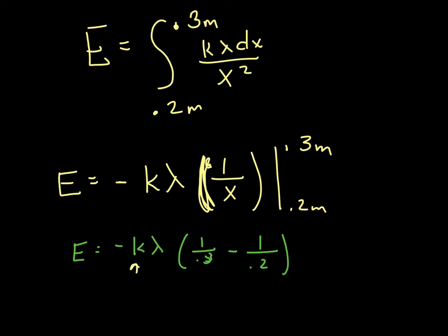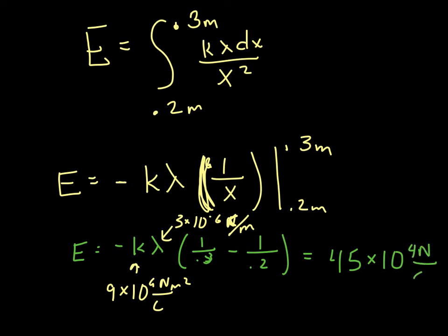Plugging in our value of k as 9 times 10 to the 9th newtons meters squared per coulomb, this is 4.5 newtons per coulomb.